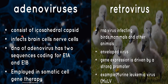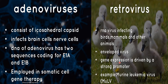Adenoviruses consist of an icosahedral capsid and infect brain cells and nerve cells. The DNA of adenovirus has two sequences coding for E1A and E1B, and it is employed in somatic cell gene therapy. Retrovirus is an RNA virus infecting birds, mammals, and other animals. It is an enveloped virus whose gene expression is driven by a strong promoter; an example is Murine Leukemia Virus.